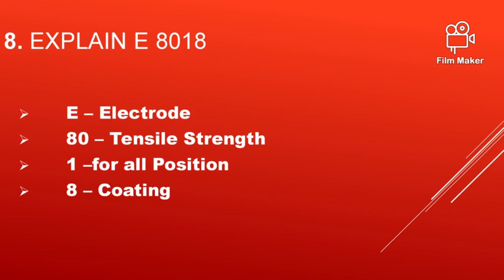Explain E8018 electrode designation. E is covered electrode; 80 is 80,000 psi tensile strength; 1 is for all position welding; and 8 for coating, that is basic coated electrode.